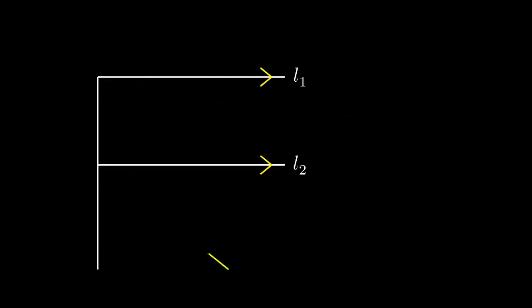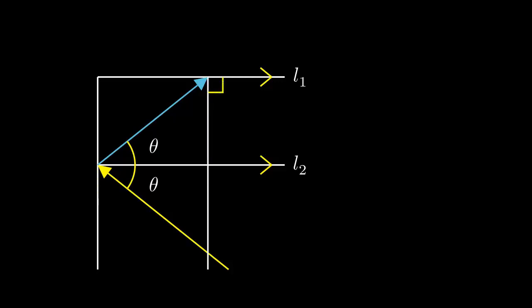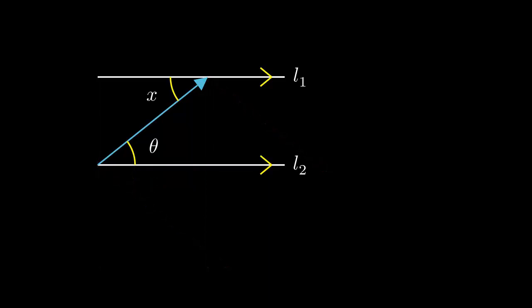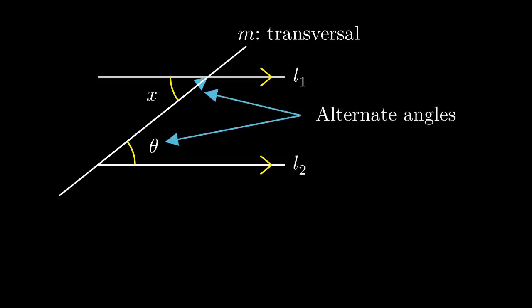Now, a ray is incoming to the left mirror. There is a specular reflection here. The measure of the angle of incidence and the angle of reflection are the same. So if I put the measure of this angle as theta, then the measure of the reflected angle is also theta. The reflection ray goes to the upper mirror and again makes a specular reflection. Let's say the measure of this angle is x. I just pointed out that line segments L1 and L2 are parallel. Let's put the transversal line M of L1 and L2. We already know that alternate interior angles have the same measure. Thus, x is equal to theta.